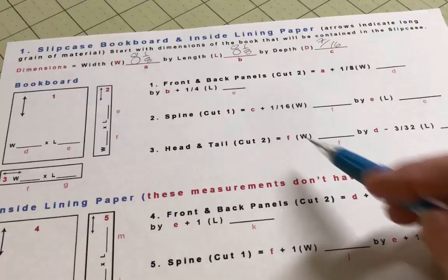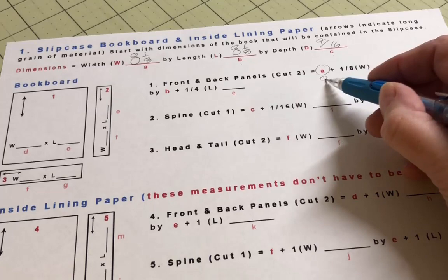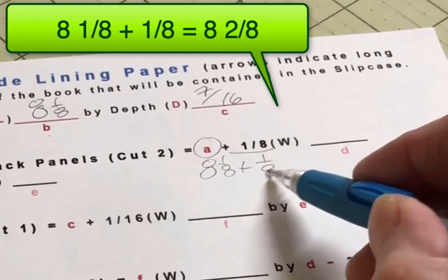Now just start working your way down the worksheet. Any place you see an A, B, or C you can fill in, because now you know those values. The first formula has you add 1/8 of an inch to your width, or A value, which in my case is 8 and 1/8. So you end up with 8 and 2/8.